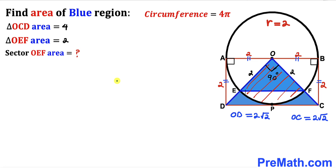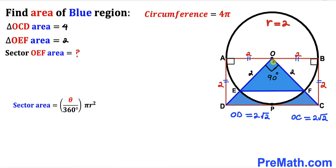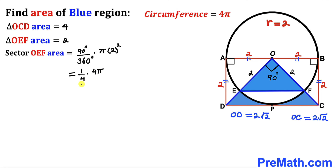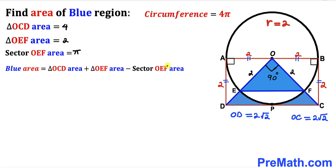Now we calculate the area of sector OEF. Recall: sector area = (θ / 360°) × π × r². Here θ = 90° and r = 2, so sector area = (90/360) × π × 2² = ¼ × 4π = π.